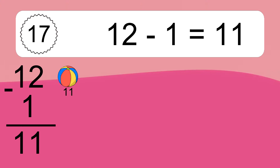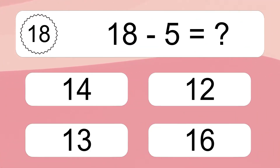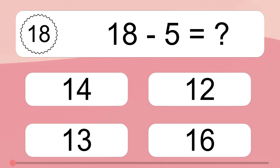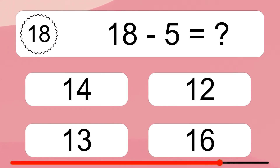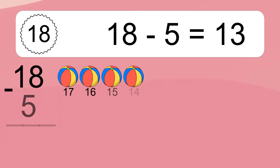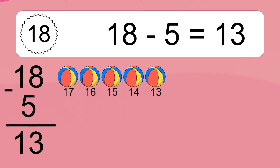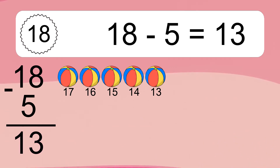18 minus 5 equals what? 18 minus 5 equals 13. Let's count it: 17, 16, 15, 14, 13.